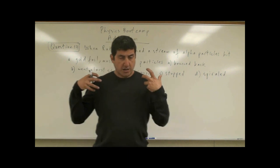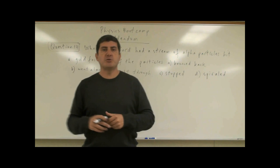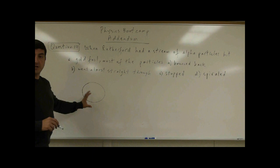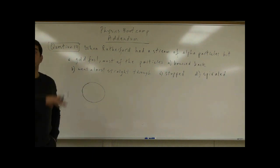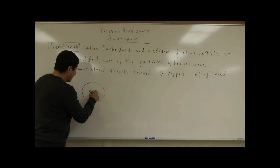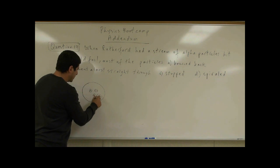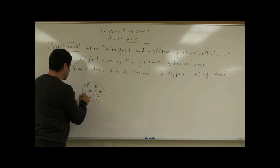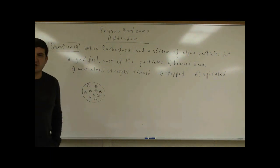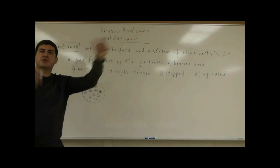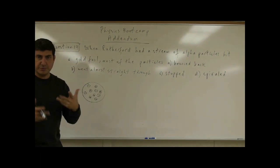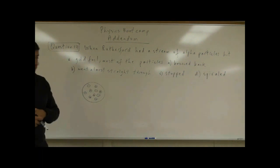One of the two opposing theories of the nature of the atom was that the atom was just made up of positive and negative charges distributed randomly — positive, negative, positive, negative — kind of like a pudding model of the atom, where charges were distributed with no particular location.